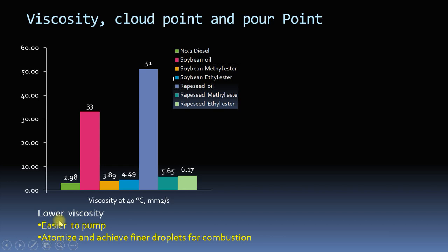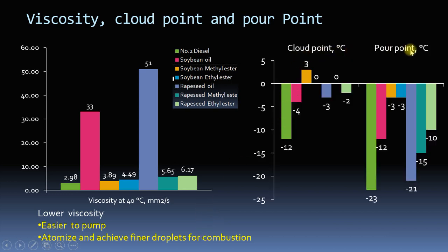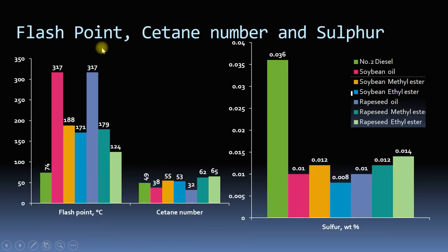After transesterification, these viscosities are reduced; however, they have still not reached the value of diesel. Viscosity is important in a diesel engine because lower viscosity makes it easier to pump and easier to atomize — meaning you can break the fuel into finer droplets for better combustion. Regarding cloud point and pour point, biodiesel has higher cloud point and pour point than diesel fuel even after transesterification, meaning biodiesel will gel in cold weather — so cold weather operation is a problem.